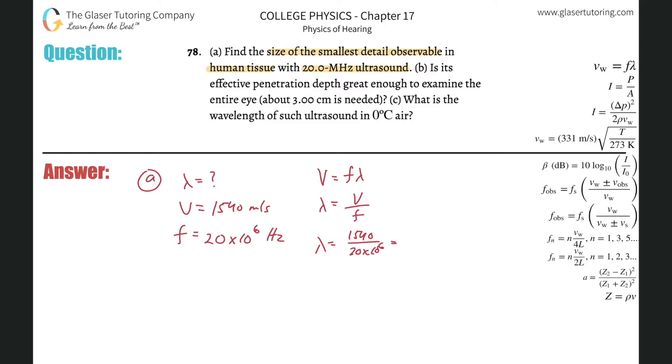So what do we get here for the wavelength? 1540 over 20 times 10 to the sixth, and it's about 7.7 times 10 to the minus 5 meters. You can convert that into micrometers if you wanted, doesn't matter, but that would be the value.